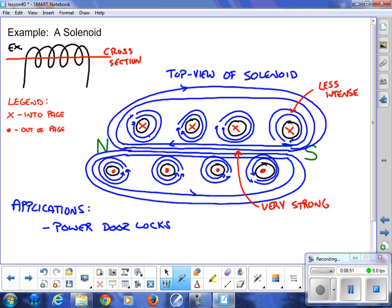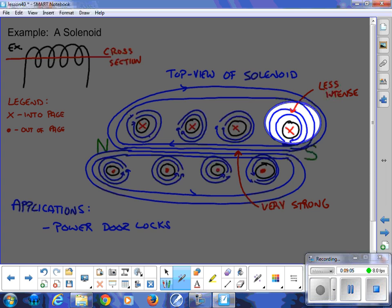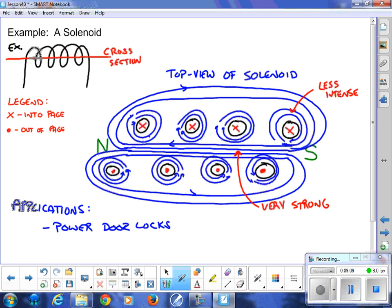I'm looking down on this top view of the solenoid. All I can see is the ends of the wire because we hacked off or cut off the top portion here. The legend's off to the side, it'll be provided on a test. X is going into the page, dots are coming out of the page. Using right-hand rule number one, I need to find the fields that circle each piece of wire, each copper wire.